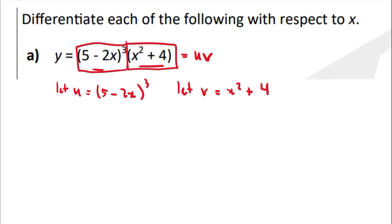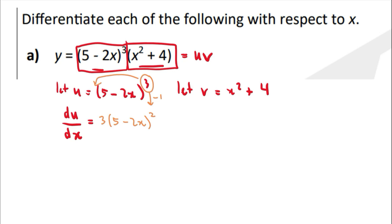Let's go step by step. Once we have labeled them as u and v, the first thing to do is differentiate each one with respect to x. For du/dx, we differentiate u with respect to x. We apply the chain rule: bring the power to the front, giving 3(5 minus 2x) squared, then multiply by the derivative of the inside, which is negative 2. That gives us the du/dx. Let's do the same for v.